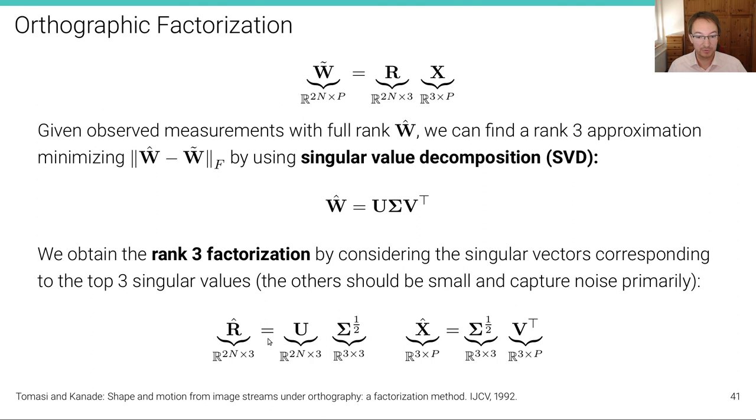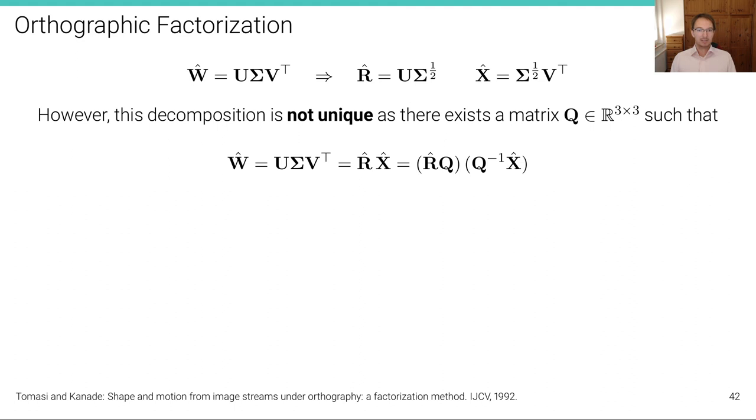Because if I multiply both together, I obtain UΣV^T. But now, because we have done this factorization and erased all the singular values and singular vectors that are not the top three, we obtain again a rank-three factorization. See that Σ is three-by-three, V is three-by-P. So, we're removing all the singular vectors that are not relevant.